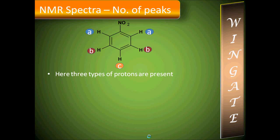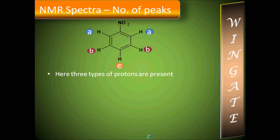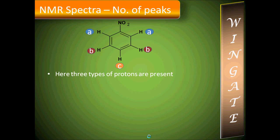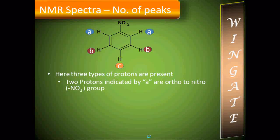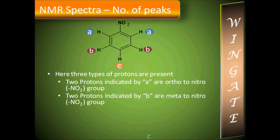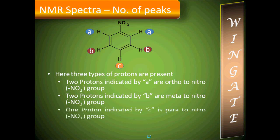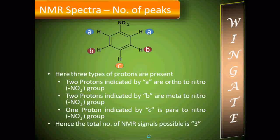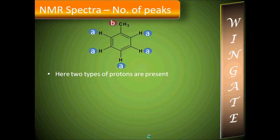Now let us take an aromatic compound: nitrobenzene. Here three types of protons are present. The protons indicated by A are ortho to the nitro group, those indicated by B are meta to the nitro group, and those indicated by C are para to the nitro group. The total number of NMR signals possible is 3.